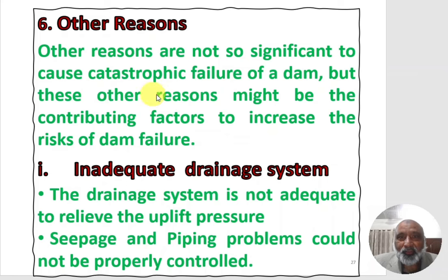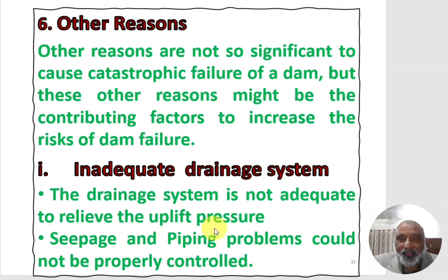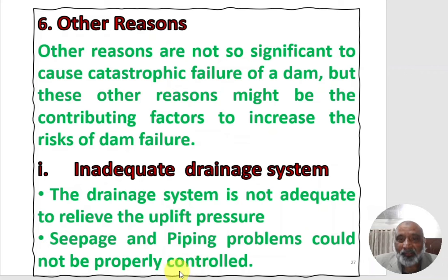Other reasons are not significant enough to cause catastrophic or complete failure of a dam, but they may be contributing factors that increase the risk of dam failures. Inadequate drainage systems that cannot relieve uplift pressure may cause instability to the dam structure. Seepage and piping problems that could not be properly controlled are also contributors. Regional groundwater levels will change after construction, and all of this should be anticipated and addressed in the design.